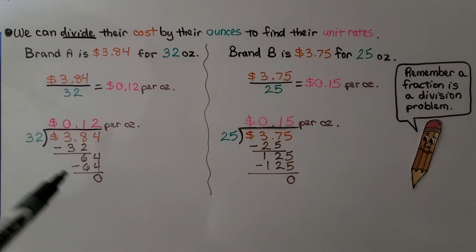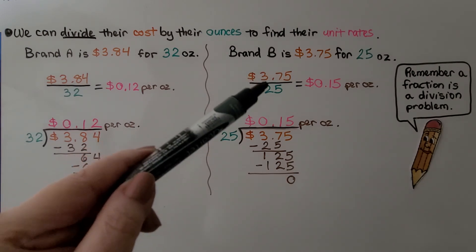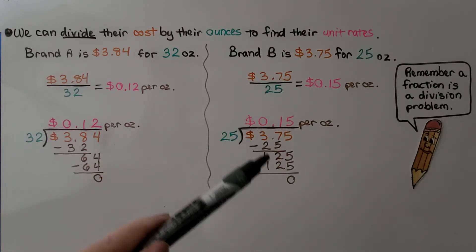If you're confused about how to divide with decimals, I'll put a link in the description for the video we just did learning about that. For Brand B, we do the $3.75 over the 25, and we get $0.15 per ounce.